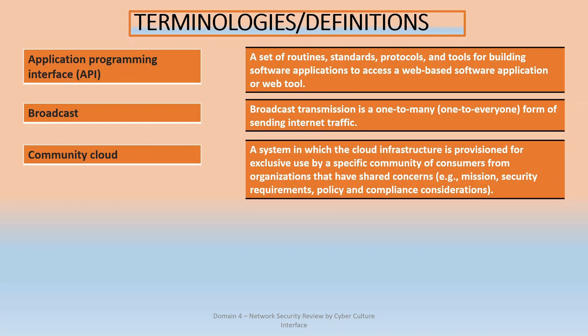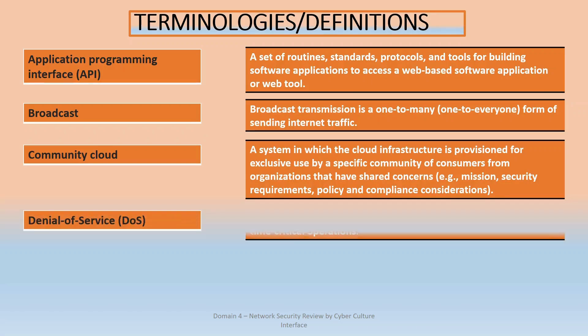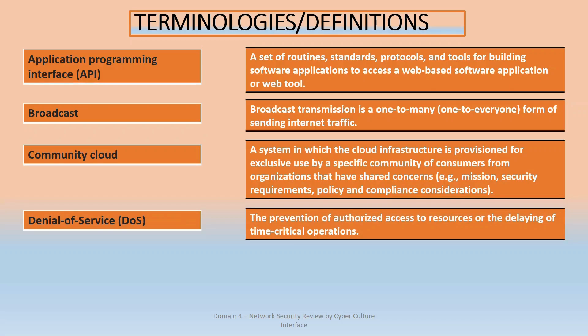Community cloud is a system where cloud infrastructure is provisioned for the exclusive use by a set of consumers. It could be for security, a particular mission, or policy — for example, a government body. A community cloud is set up for exclusive use by a specific community.